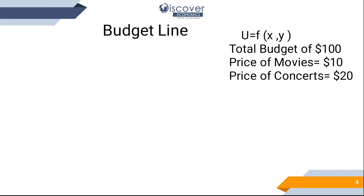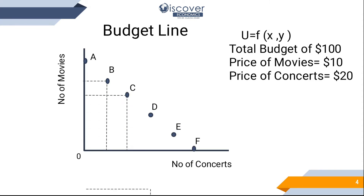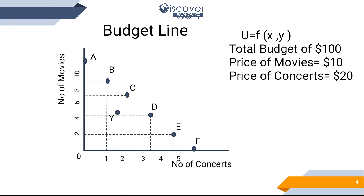Utility is a function of X and Y. We have two commodities, X and Y, and their prices are given. On one axis we have the number of concerts and on the other axis the number of movies. We pinpoint all these bundle points and then connect them to get the budget line.